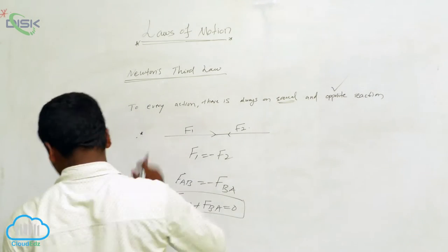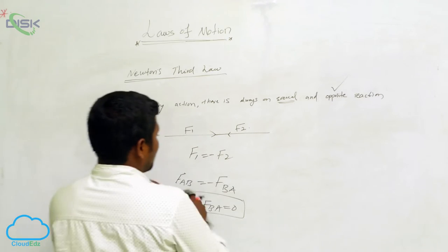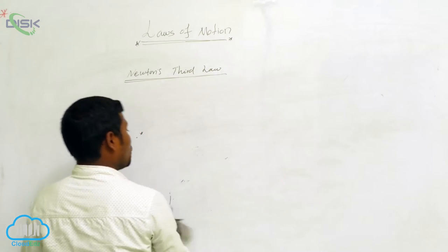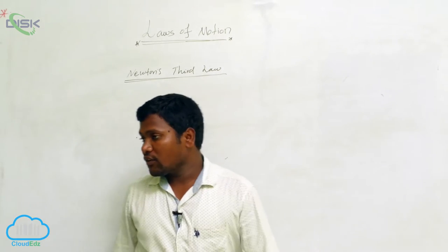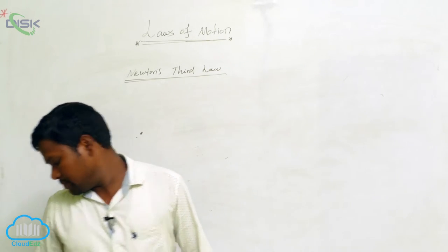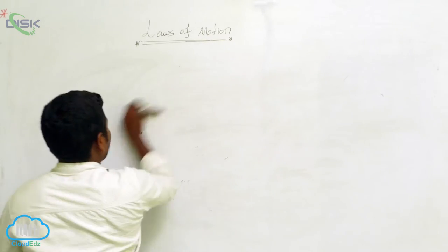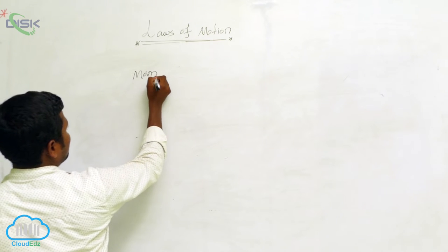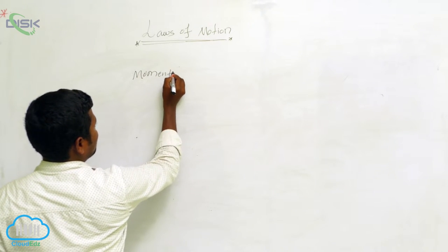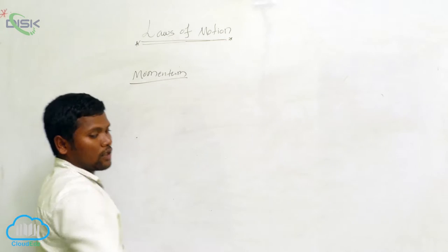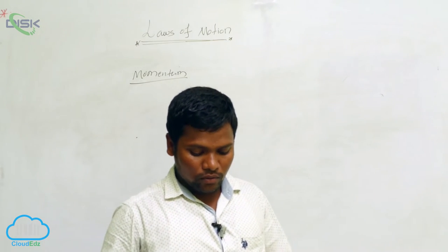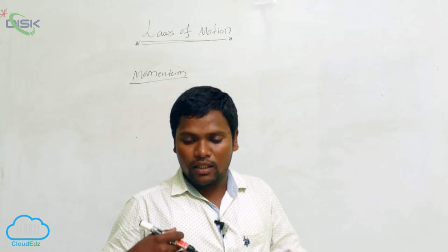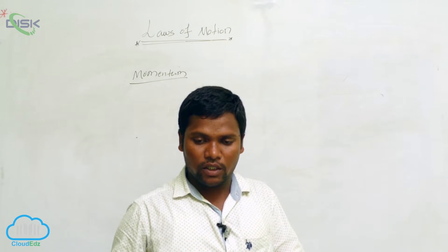Next we will see about momentum. What is momentum? Already I said about momentum. Now we are going to see momentum and conservation of momentum. What is my moment? My moment is at rest position. Let us consider one object. Myself is object.